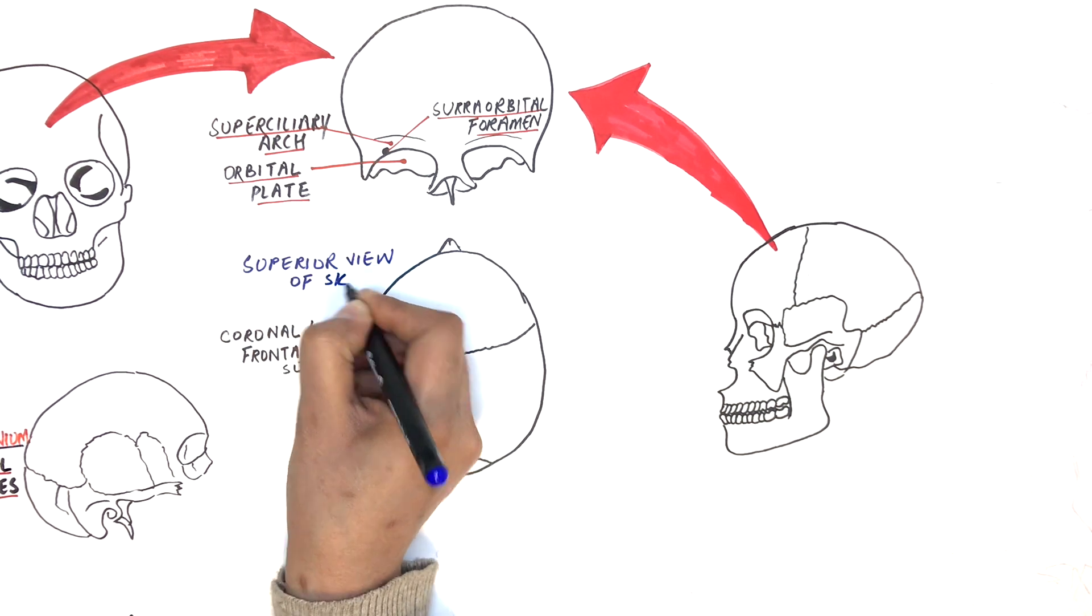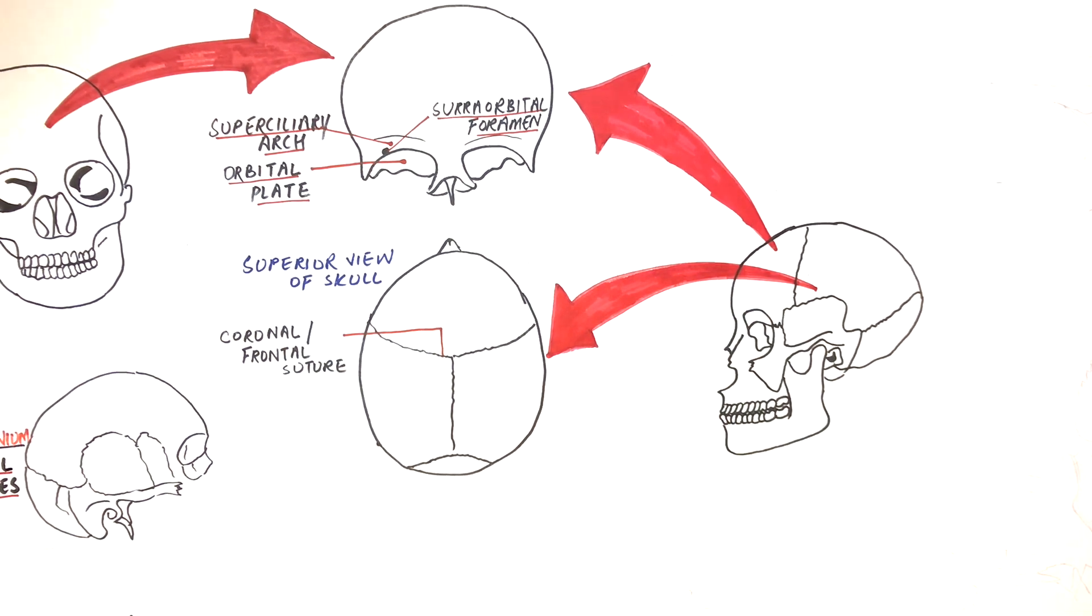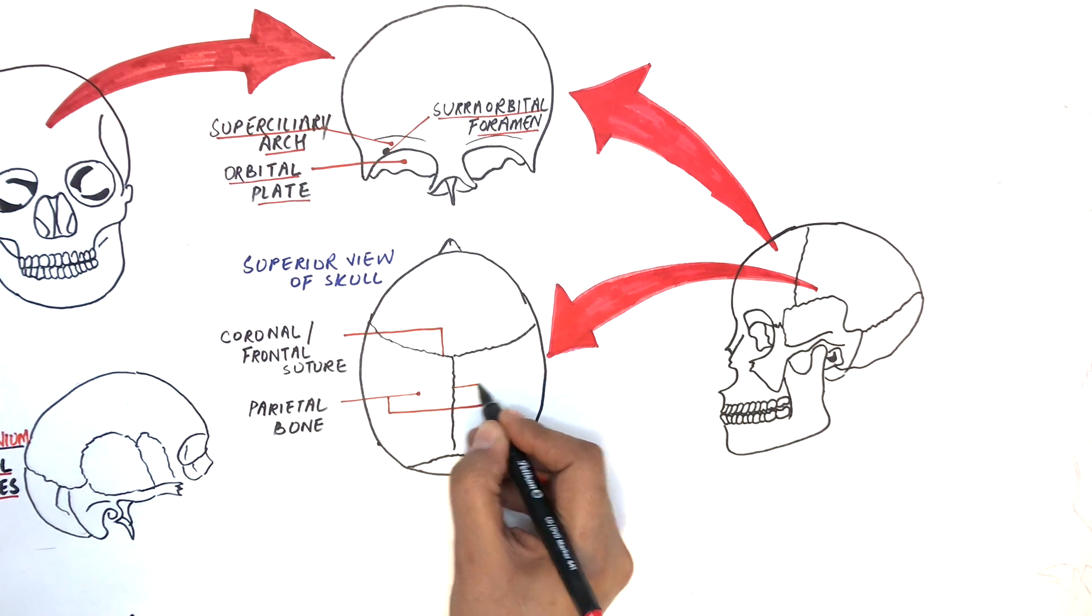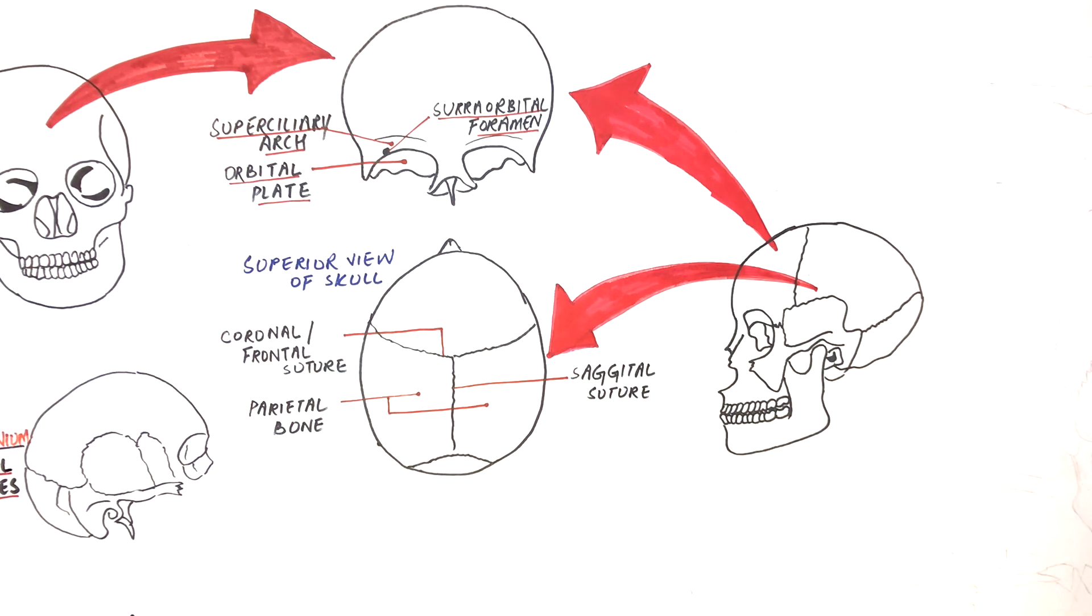Coming to the parietal bone, in Latin parietal means wall. This bone makes most of the roof and lateral walls of the skull. They are two in number, both of which are attached with each other at the sagittal suture and to the frontal bone at the coronal suture, and then to the occipital bone at the lambdoid suture.